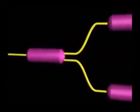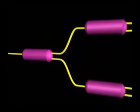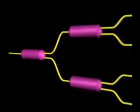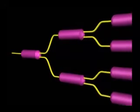Although construction techniques vary, one way to build a 1 by N splitter is to combine a series of 1 by 2 splitters as shown here.